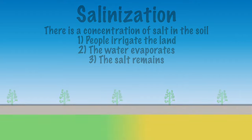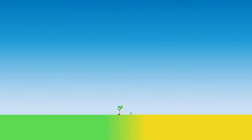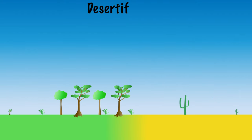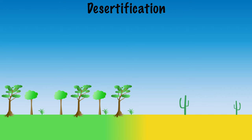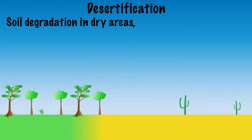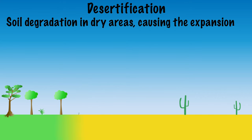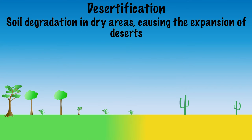Soil degradation in a fairly dry area can lead to desertification. The soil can no longer hold water in an already dry area, so nothing can grow and a desert is created. This is successfully countered in some areas by digging into the soil, loosening the soil, and planting new trees.